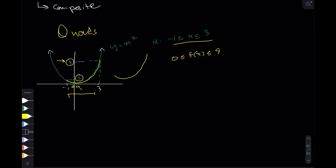The key thing to understand about domains and ranges for quadratics is that a smaller x-value does not mean a smaller y-value. Negative one gave y = one, but the actual lowest value was the turning point at zero. The turning point is the lowest point — going left or right from it gives a higher y-value.